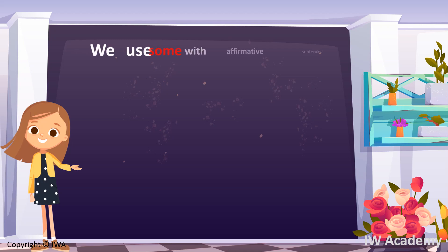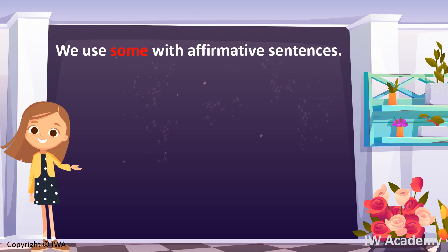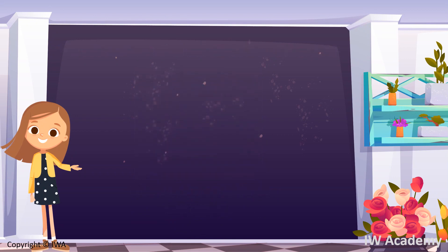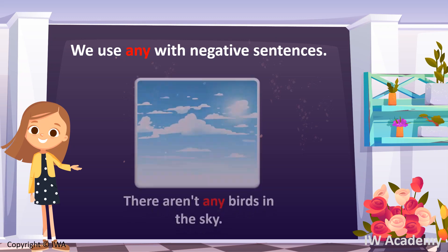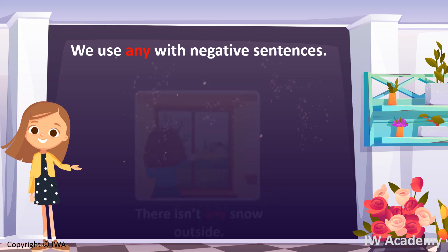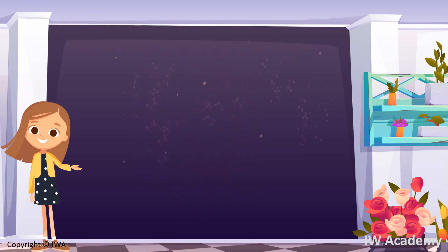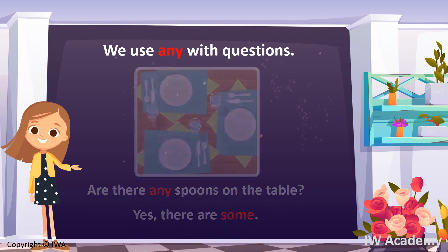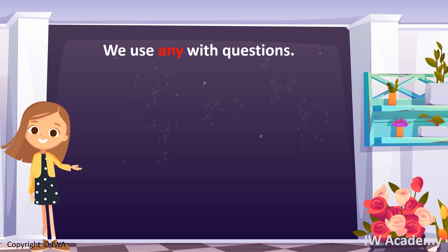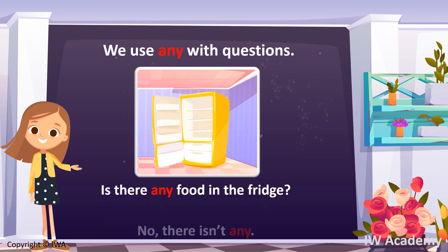We learned that we use the word 'some' with affirmative sentences. For example: There are some students in the class, and there is some water in the bottle. We also learned that we use the word 'any' with negative sentences. For example: There aren't any birds in the sky, or there isn't any snow outside. And we use the word 'any' with questions. For example: Are there any spoons on the table? Yes, there are some. Is there any food in the fridge? No, there isn't any.